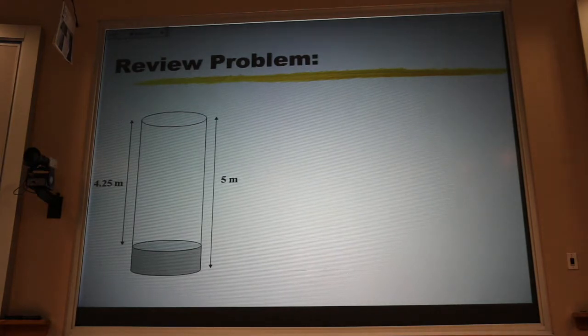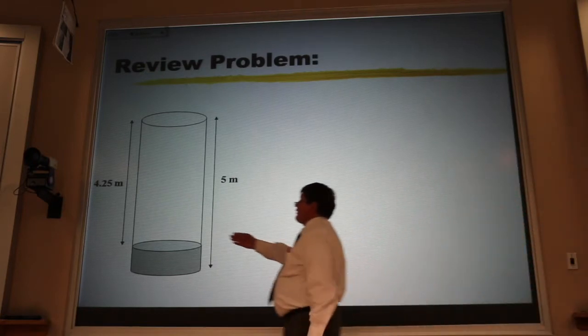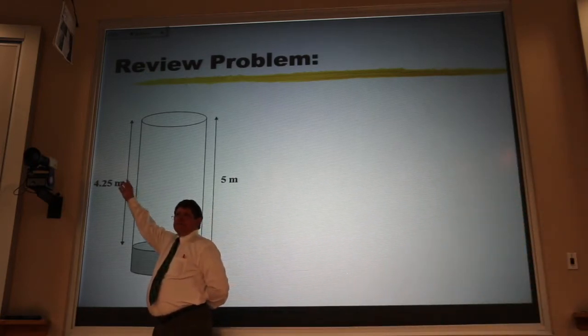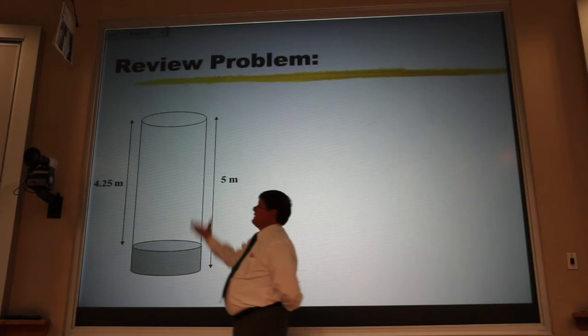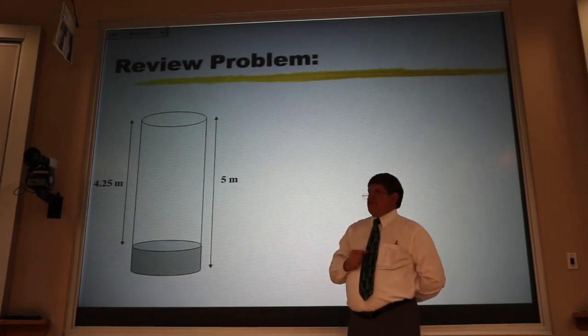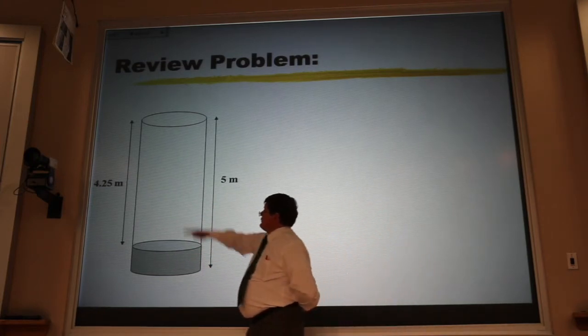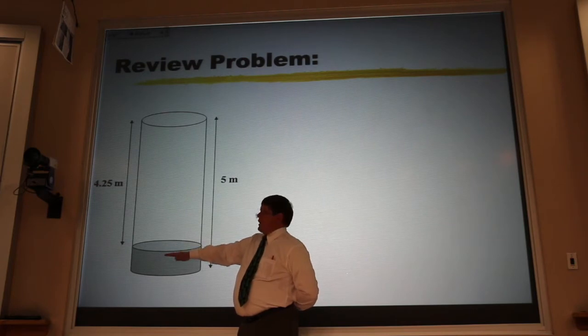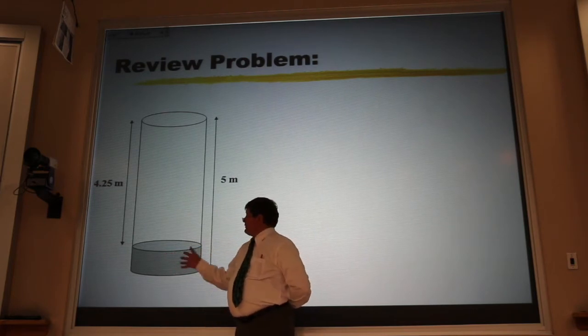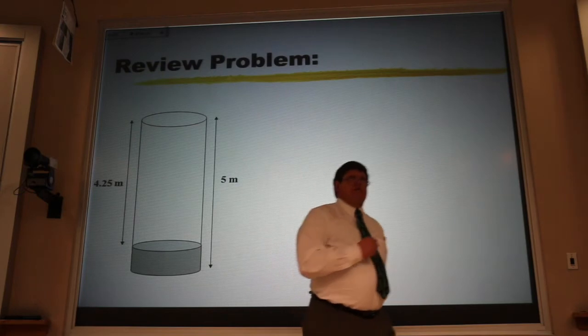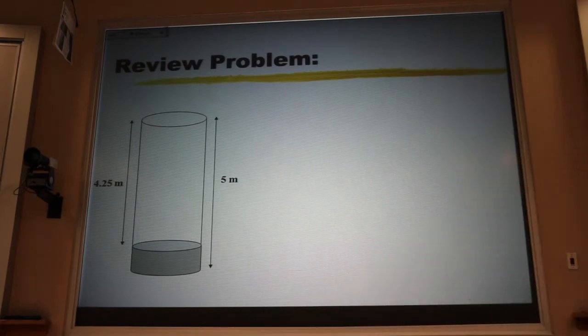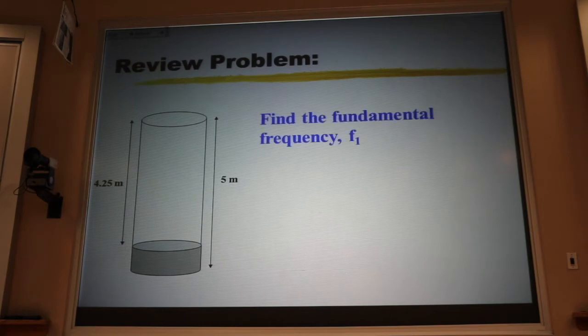What we have is a column of air that is four and a quarter meters long. We have a cylinder that's five meters long and we adjust the length of the air column by putting water in the bottom. We have three quarters of a meter of water in that bottom there. Now, the first part of this problem asks us to find the fundamental frequency, f1.